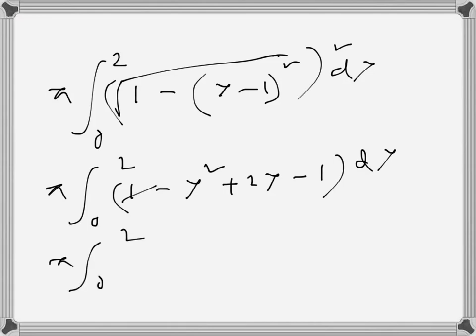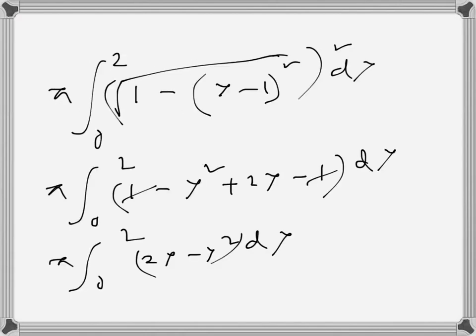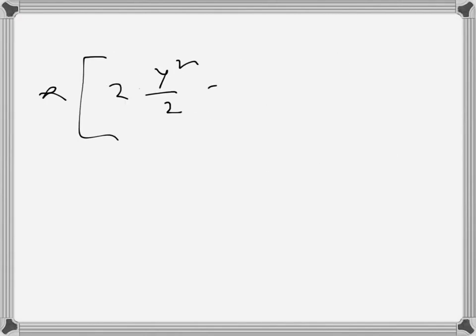So π here, from 0 to 2. These two cancel, so 2y - y²·dy. If we integrate it, it will become 2y²/2, and this will become y³/3, from 0 to 2. So π here, y², that is 4 - 8/3.